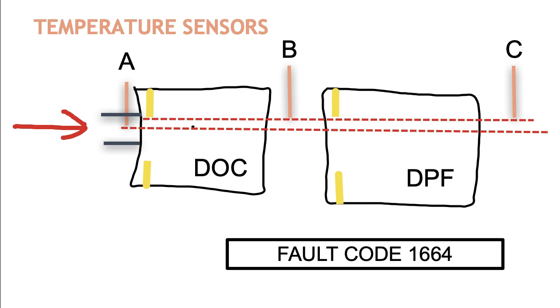Now what's important to remember is the temperature sensors only protrude into the DOC and DPF about an inch and a quarter. Now let's go back and look at those thick yellow bars that I've got at the inlet of the DOC and the inlet of the DPF. Those represent rings of soot.